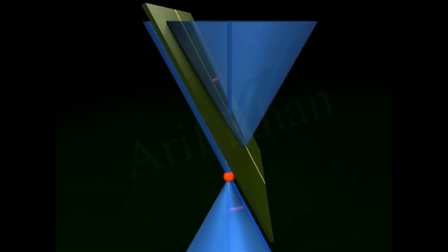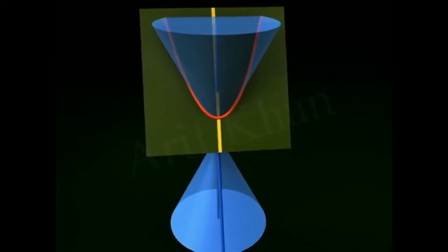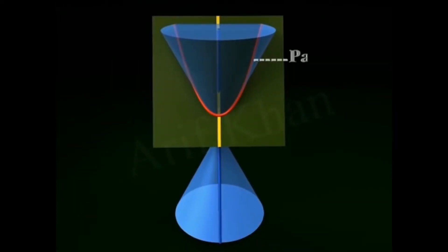Parabola: When the angle made by the plane to the vertical axis is exactly equal to the vertex angle, we get an open curve called a parabola at the intersecting surface of the cone.